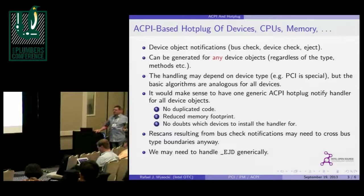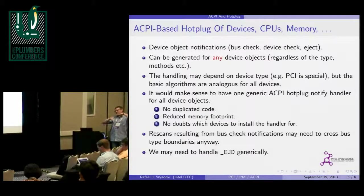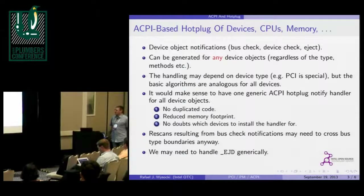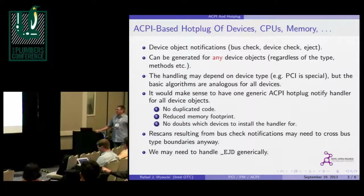For PCI it is two steps: we first scan the ACPI namespace from the given point, and then we scan the PCI bus directly. That makes it different from other types of devices — for memory, we don't have to do the second scan; we only need to scan the ACPI namespace. For CPUs it is the same as for memory. Other types of devices may require different things.